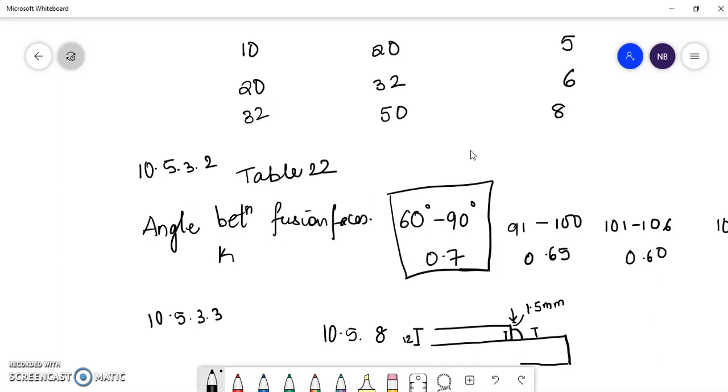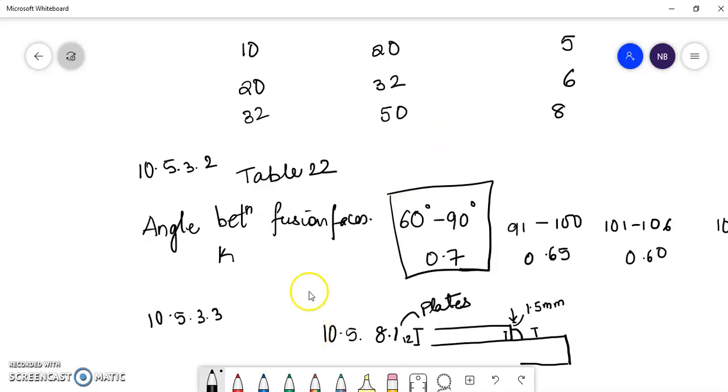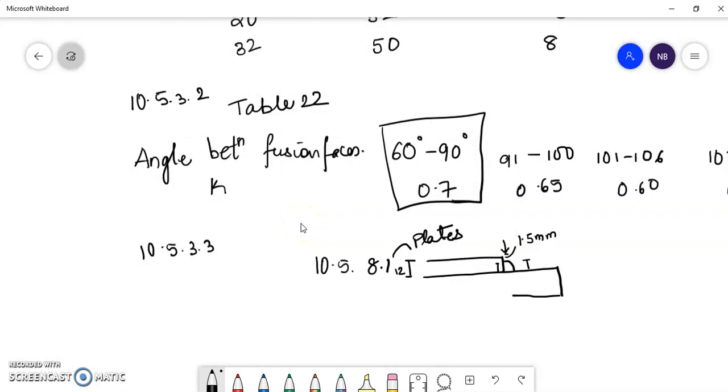Next, it talks about when angles are to be connected. So this is clause 10.5.8.2. 8.1 gives about plates or square edges of plates or any square edge for that matter. So here, 10.5.8.2 gives about rounded toe of a rolled section.